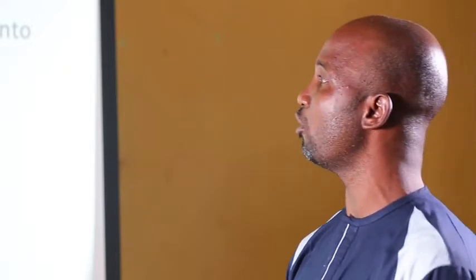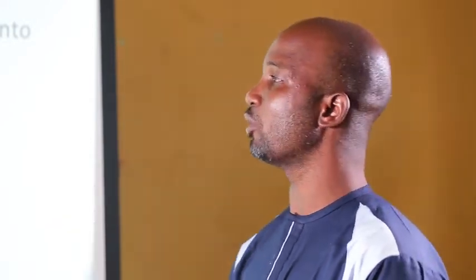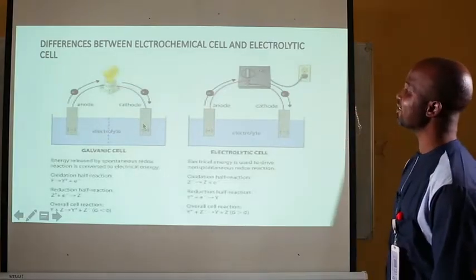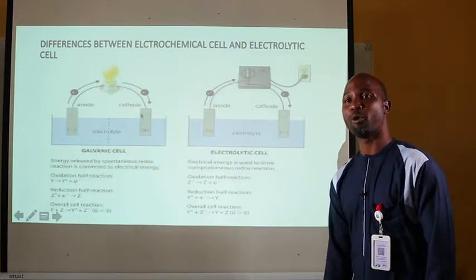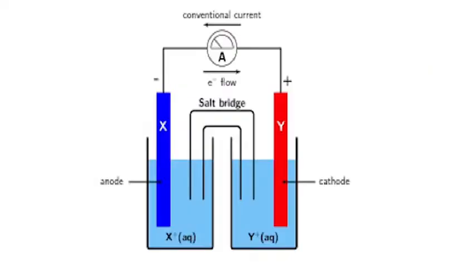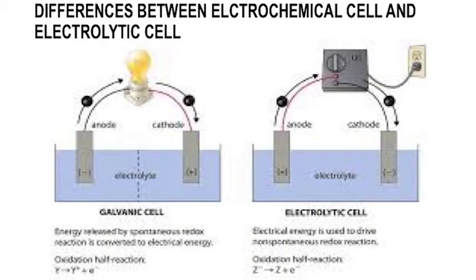The electrochemical cell is a device that converts chemical energy into electric energy. It is made up of two vessels containing an anode and a cathode respectively. A basic difference between the electrochemical cell and the electrolytic cell is that the electrochemical cell has a salt bridge or a porous partition that allows the transfer of ions, while the electrolytic cell does not. Also, the electrolytic cell has a positively charged anode and negatively charged cathode, while the electrochemical cell has a negatively charged anode and a positively charged cathode.